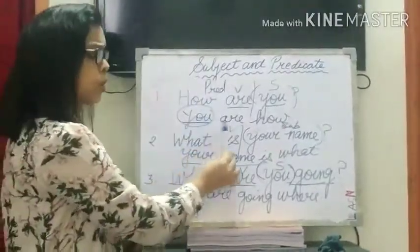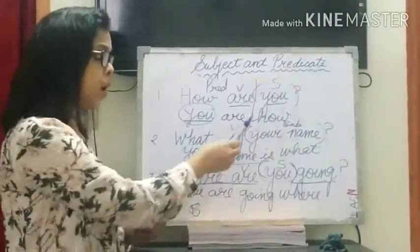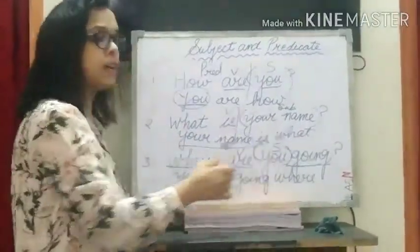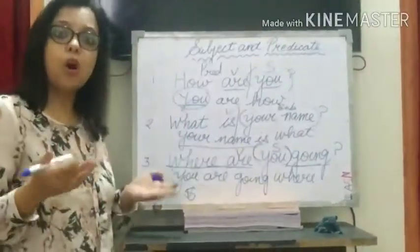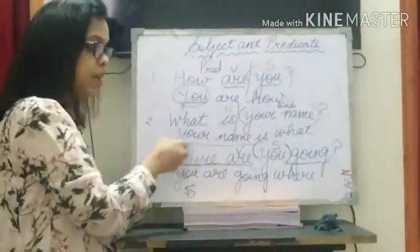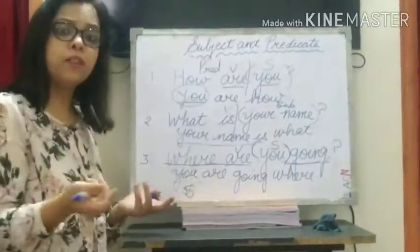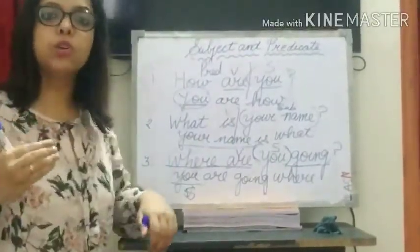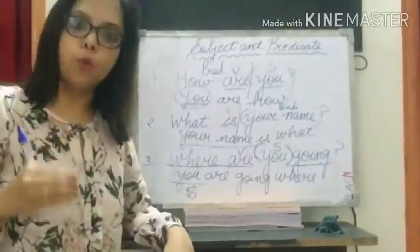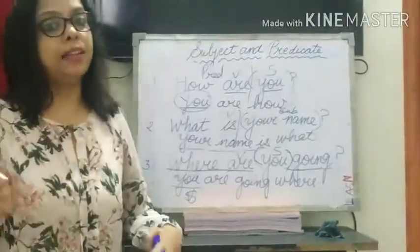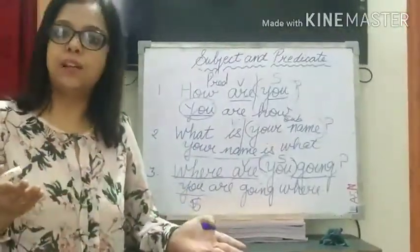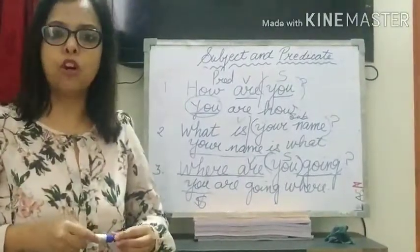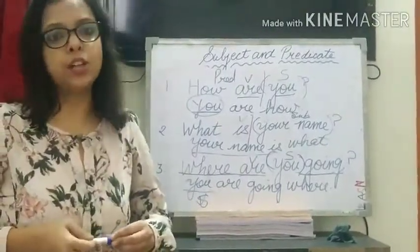For 'You are how' — who are how? Answer is 'you'. 'Your name is what?' — answer is 'your name'. 'You are going where?' — answer is 'you'. So you can put the question who or what followed by the verb, and the answer you get is the subject. Now let's see a few examples of exclamatory sentences.